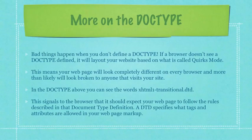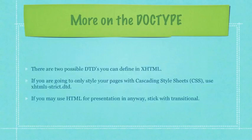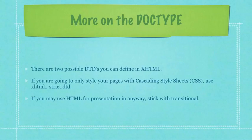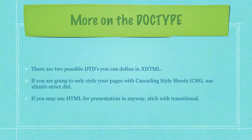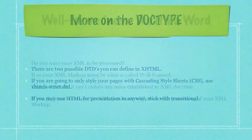A DTD specifies what tags and attributes are allowed in your webpage markup. There are two possible DTDs you can define in XHTML. If you're going to only style your pages with cascading style sheets, use the XHTML Strict DTD. If you may use HTML for presentation in any way, stick with Transitional.